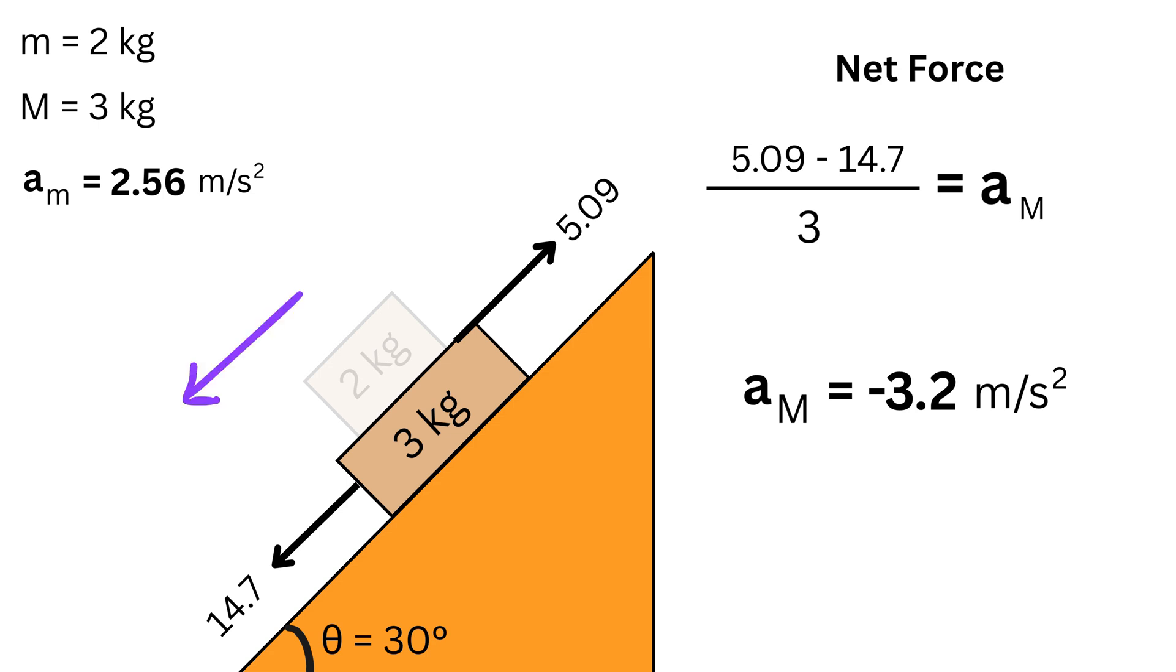This means this block moves down the incline despite the friction pulling it up. This shows clearly how friction can try to pull a block one way, but the block's weight may still dominate, determining the actual motion.